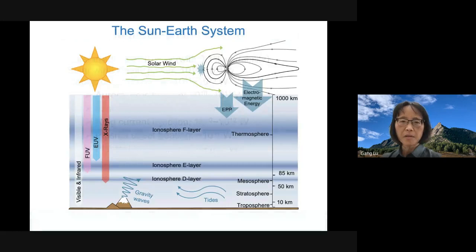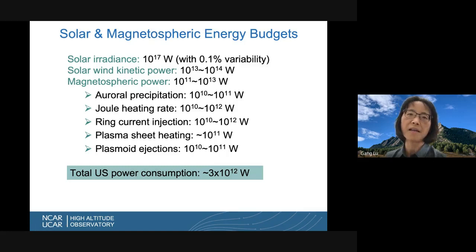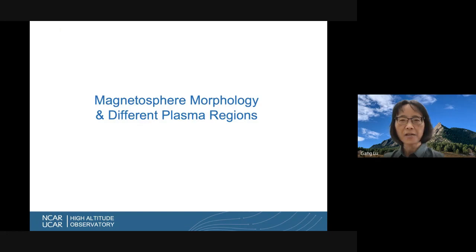To put this in perspective, the total power consumed by the entire United States is about 3×10^12 W. So the energy dissipation into the magnetosphere is really very significant. Next, I'll give an introduction to magnetosphere topology and different plasma properties.